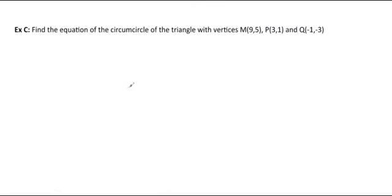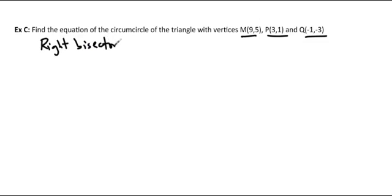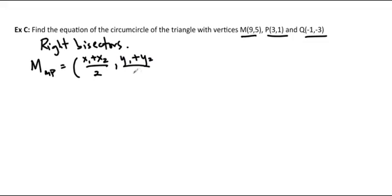We're going to do one more: find the equation of the circumcircle of the triangle with vertices M, P, and Q. We've done this before; I just want to make sure we formally go through the procedure. It's very similar to finding the centroid. All we have to do is find the right bisectors — this is going to be the intersection of the right bisectors. I'm going to do two of them since I only need two. I'm going to do the midpoint of MP. Bisector means it goes through the midpoint.